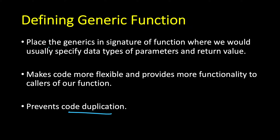In order to define generics for a function, we place the generics in the signature of the function where we would usually specify the data type of parameters and return type.